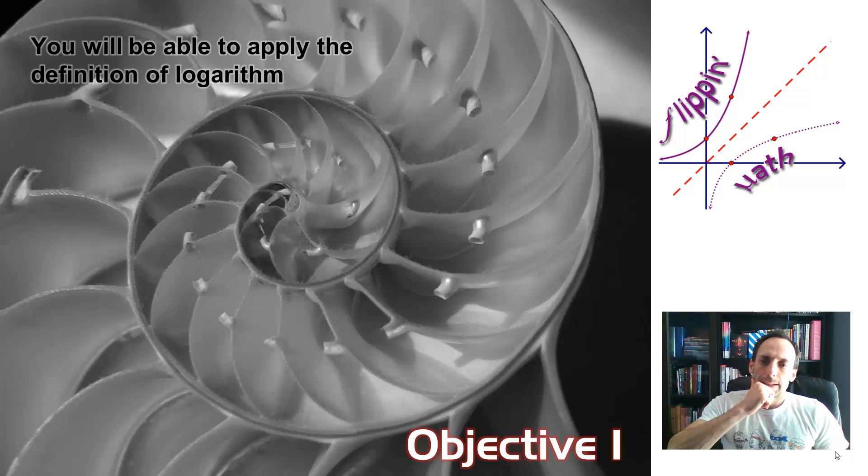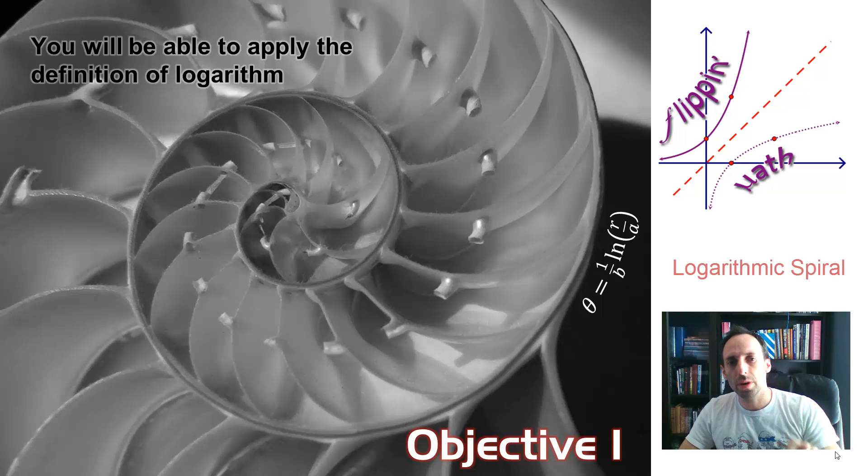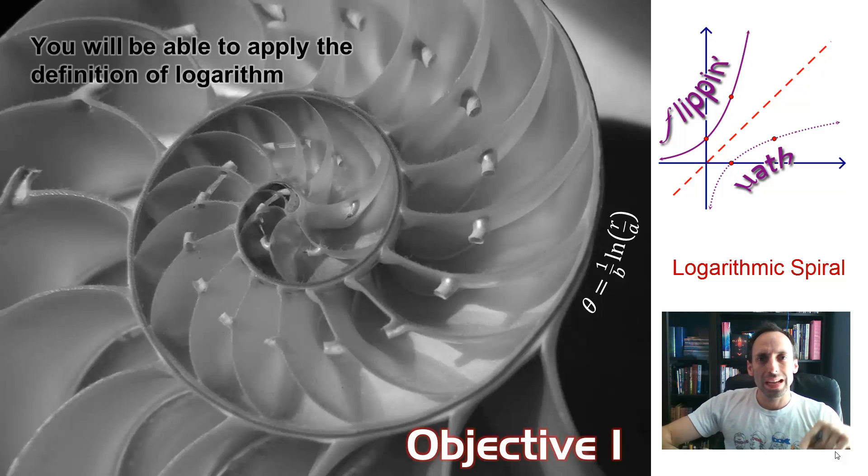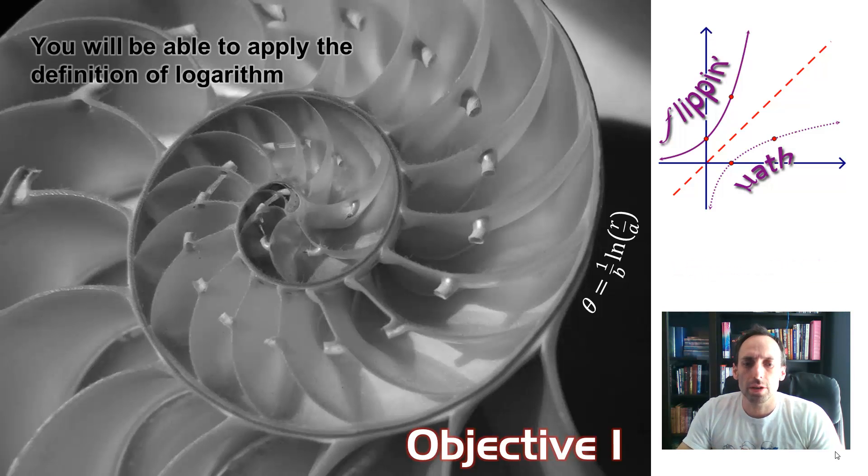So Objective 1, being able to apply the definition of a logarithm. And what you see here is the inside of a Nautilus shell, and the reason why I chose it as a picture is because this thing forms what's called a logarithmic spiral. I put the equation up there, and in that equation, it has a theta and an r, and this is graphed in something called polar coordinates, which you may see in pre-calc, maybe next year.